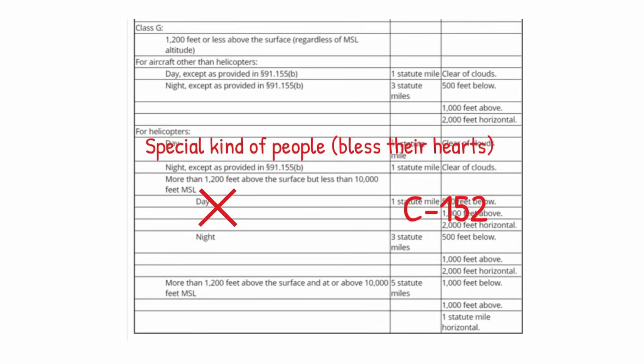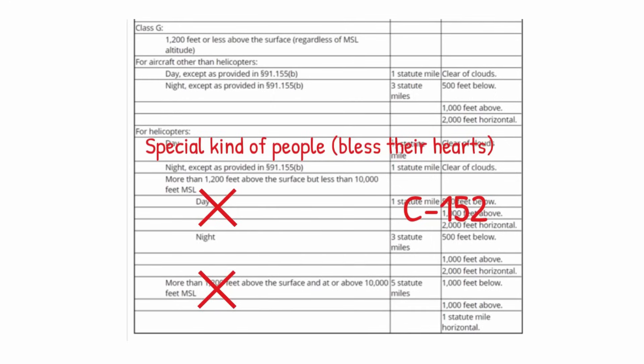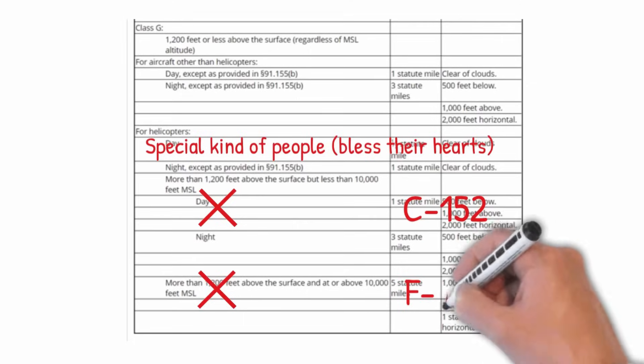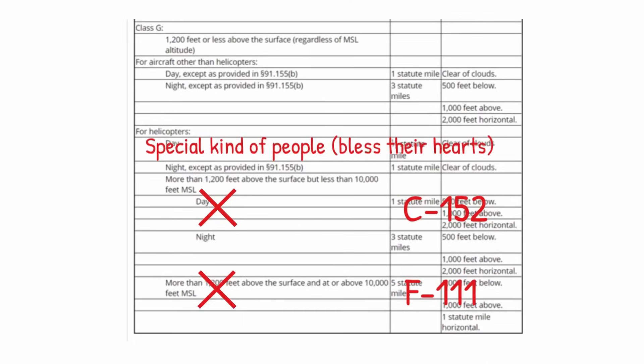The next area below that talks about being more than 1,200 feet above the surface and at or above 10,000 feet MSL. Again, I know of no areas where this applies in current VFR sectional charts. The thing I want you to remember here is F-111, as in F-111 Aardvark bomber.